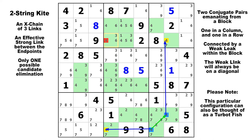I just realized that in the hand-drawn diagrams earlier, the weak links were always at the extremities of the block — from the farthest corner to the other farthest corner. But those two candidates in the weak link don't have to be in the farthest corners; it can be any diagonal. The only stipulation is those candidates can't be in the same row or the same column.